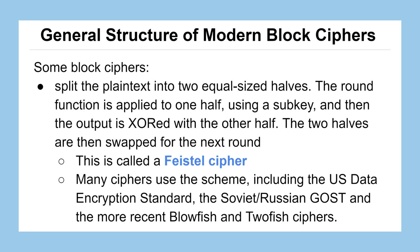Some block ciphers split the plaintext into two equal-sized halves, and the round function only gets applied to one half using some key. Then we take that output and XOR it with the other half, and swap the two halves for the next round. This particular method is called the Feistel cipher, and many block ciphers used today — like the U.S. Data Encryption Standard (DES), the Soviet equivalent GOST, and more recently Blowfish and Twofish — use this Feistel cipher.